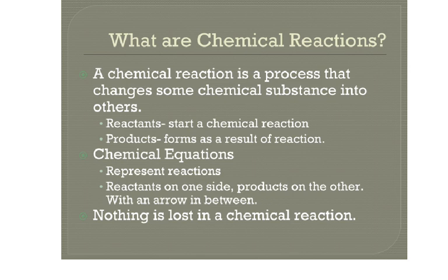Chemical reactions have reactants and products, and these are represented by chemical equations. You have reactants on one side, products on the other, and an arrow in between to show what you began with and what you ended up with. One of the biggest things to know coming out of this video is that nothing is ever lost in chemical reactions — matter is always conserved.